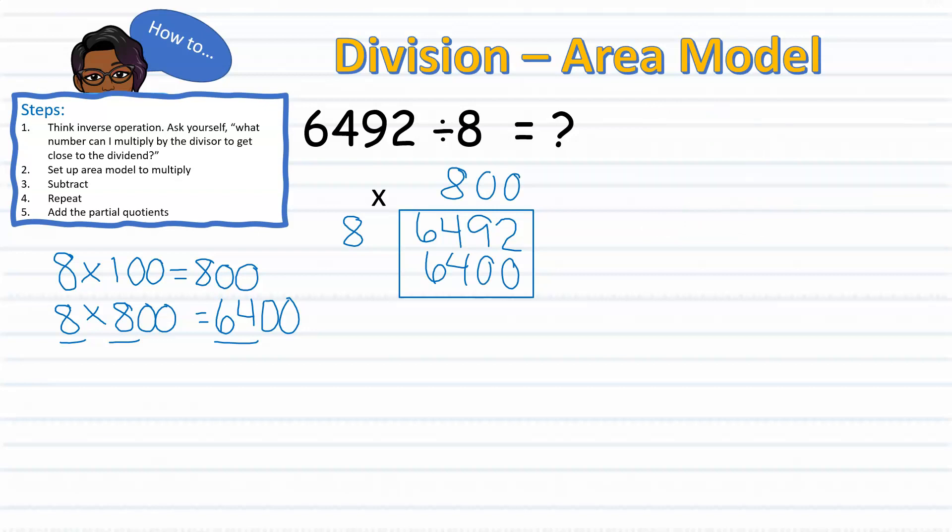After adding those numbers to my area model, I am now ready to subtract 6,400 from 6,492, leaving me with a difference of 92. Since I know that 92 is greater than my divisor, I can continue dividing. Now that I have extended my area model, I am now ready to divide 92 by 8.